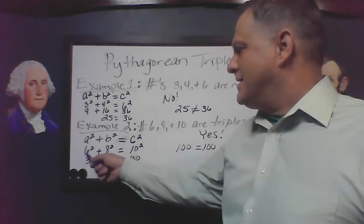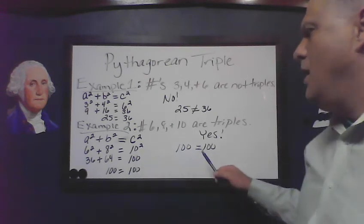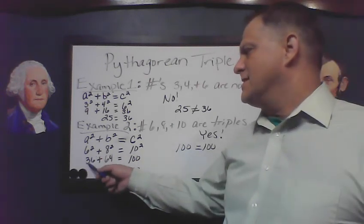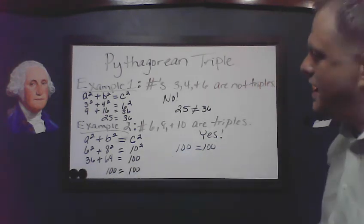We're plugging in 6 squared, 8 squared, and 10 squared. So we get 6 times 6 is 36, 8 times 8 is 64, 10 times 10 is 100.